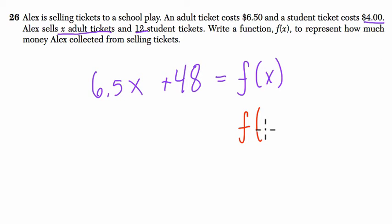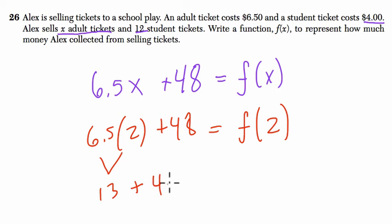For example, if we wanted to find what happens when two adult tickets are sold, that would be $6.50 times 2 plus $48. You can see that's just $13 for the two adults plus the $48 for the students, which equals $61.